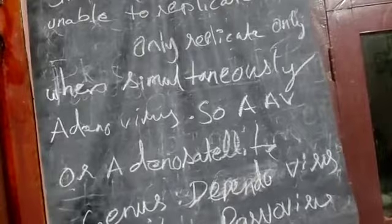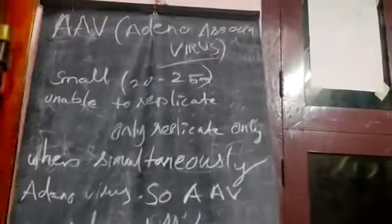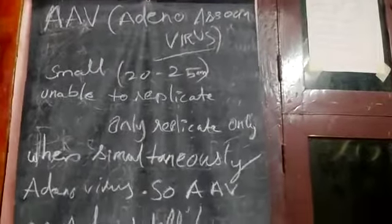Types 1, 2, and 3 are of human origin and cause only natural infection. These are the key points to remember about adeno-associated virus.